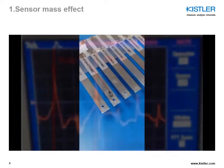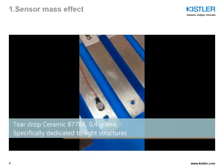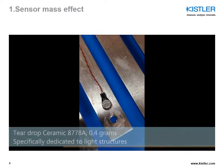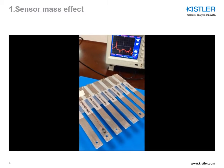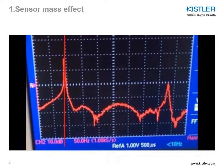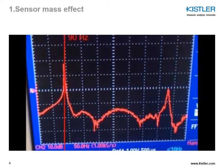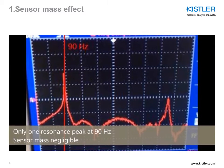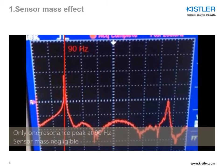A lighter sensor is needed. We are now going to use one of our teardrop sensors, the 8778A, which is 0.4 grams. With this sensor, the first peak shifts higher to 90 Hz and the next peak is much lower and further away. The sensor mass here can be assumed as negligible.